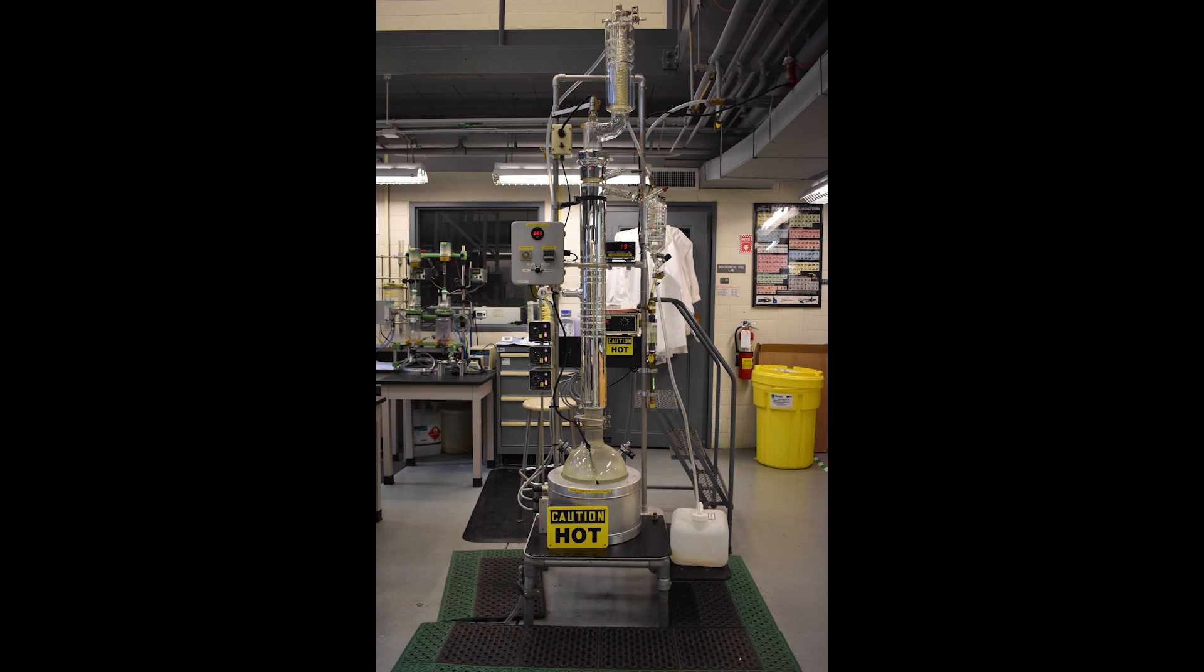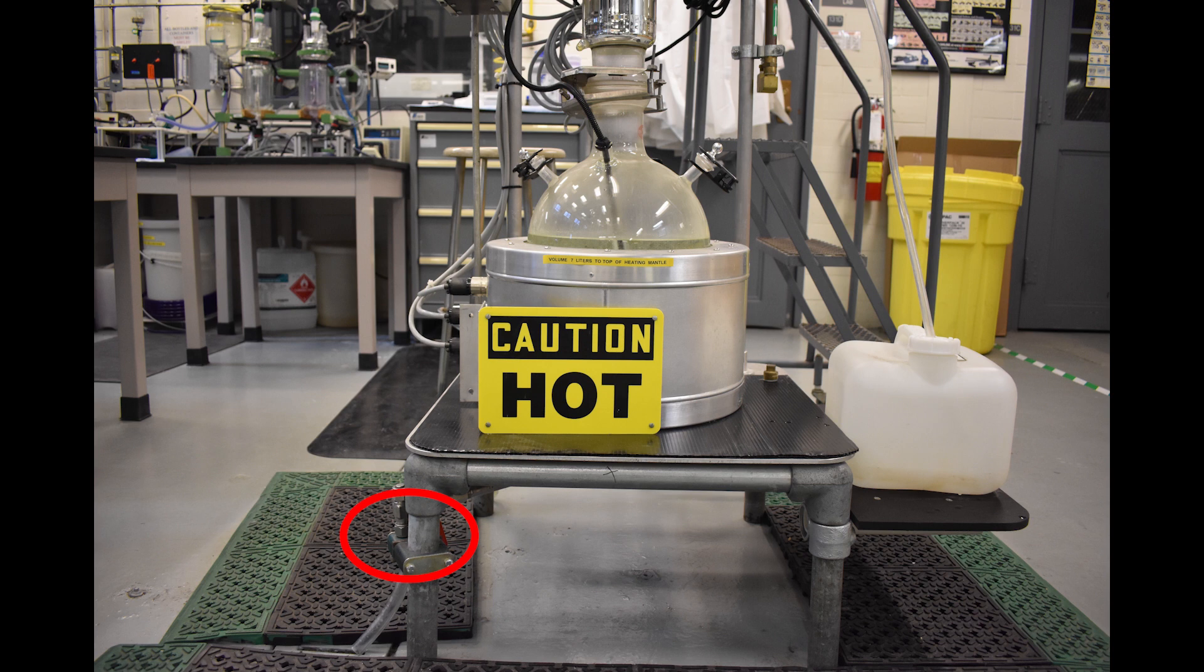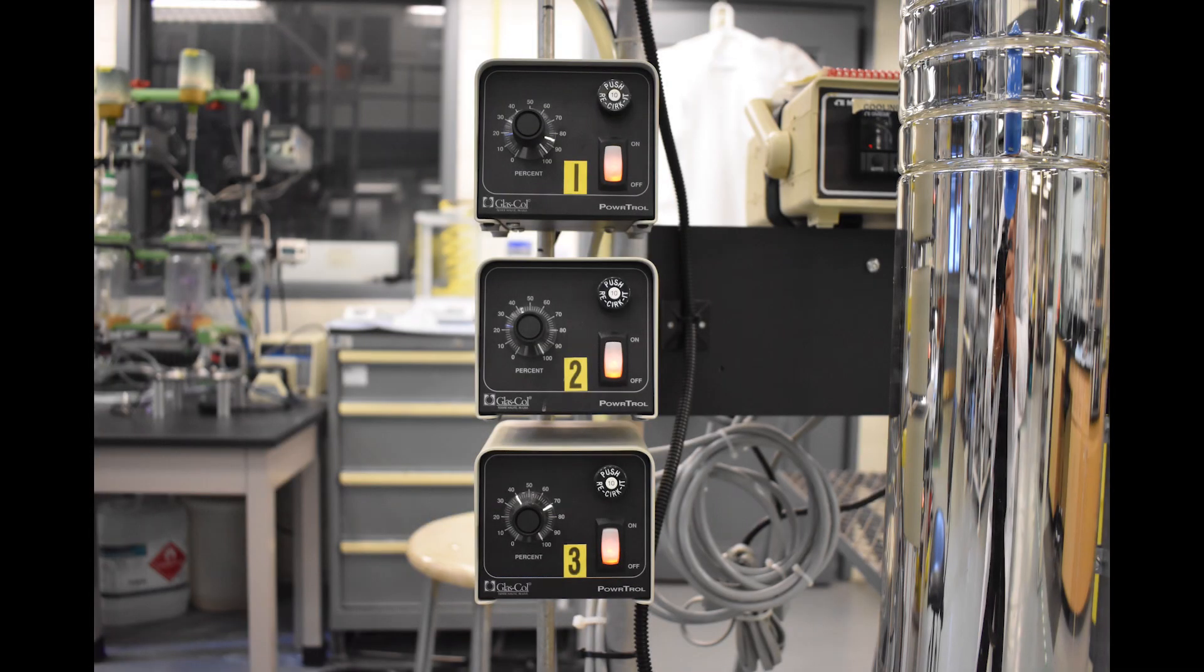The solution being tested will be poured into the still pot which is connected to valve V4. This solution will be heated up and brought to a boil in the system using heaters controlled by controllers C1, C2, and C3.